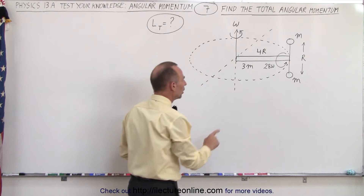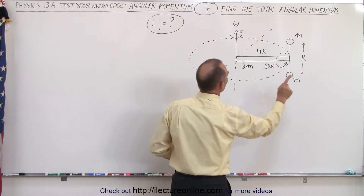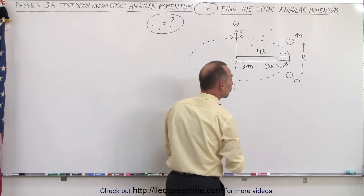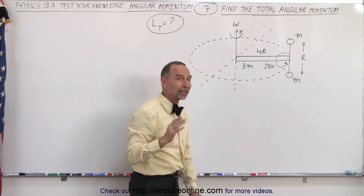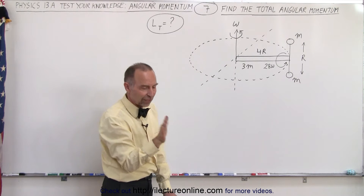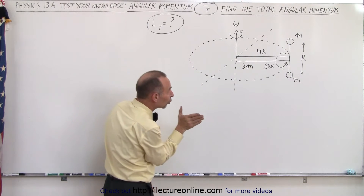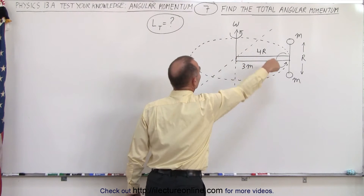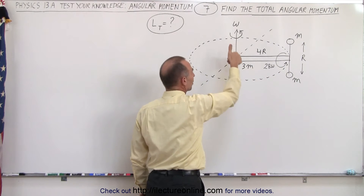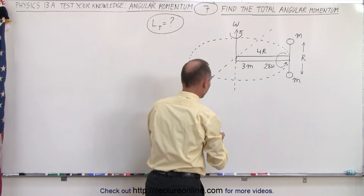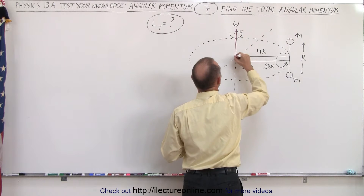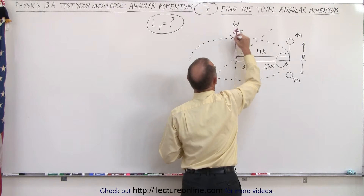First of all, the rotation about the vertical axis will create an angular momentum vector in the upward direction. All we have to do is take our fingers, curl them in the direction of motion of the bar and the two masses, and we can see that our thumb points upward. So we're going to have an angular momentum vector pointing upward.